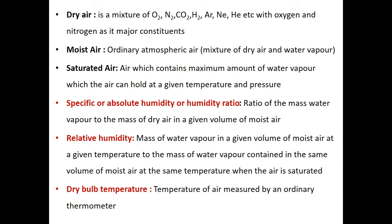Moist air is ordinary atmospheric air — a mixture of dry air plus water vapor. Saturated air is air which contains the maximum amount of water vapor that the air can hold at a given temperature and pressure. It is called saturated air because it is saturated by the presence of water vapor.